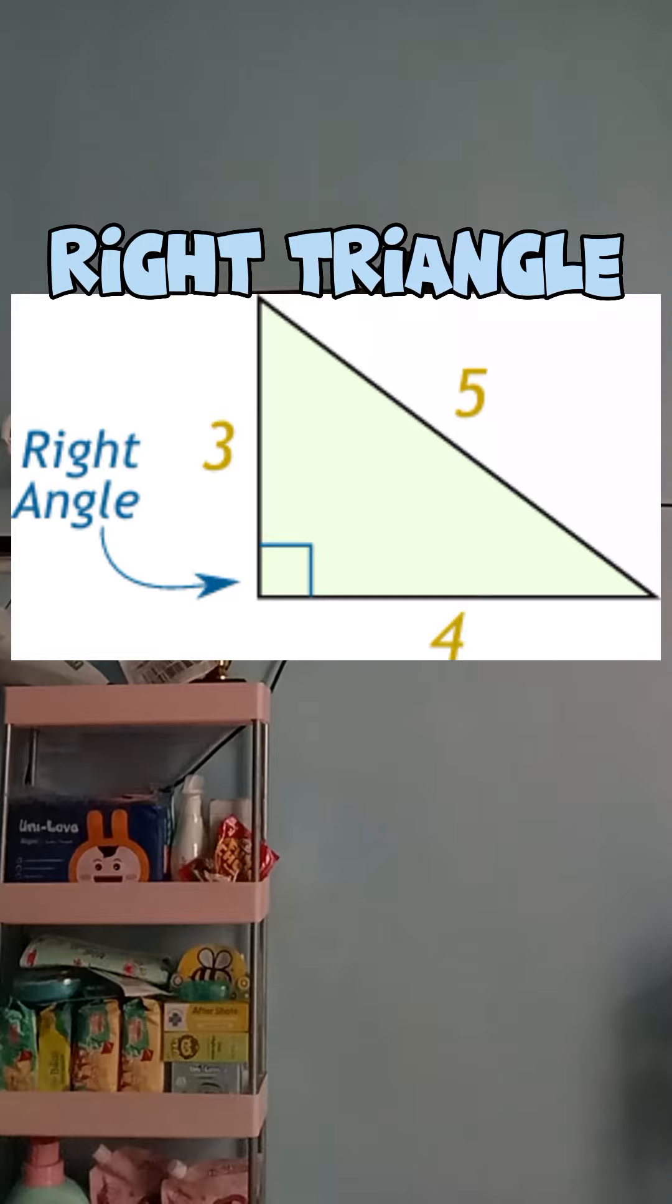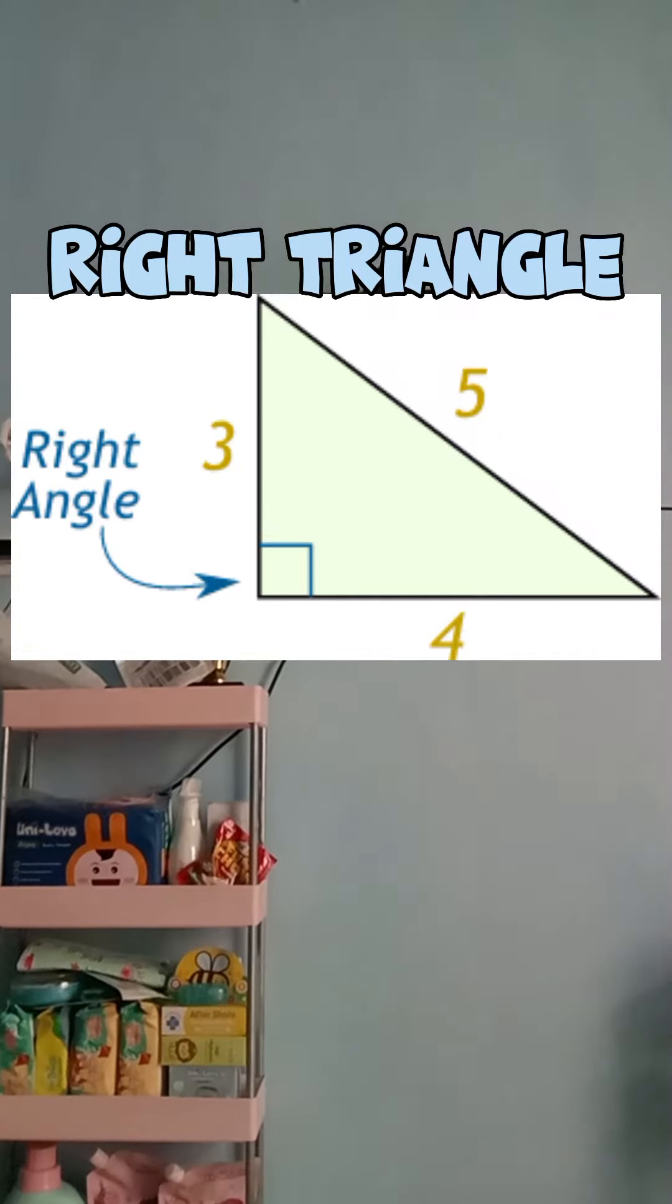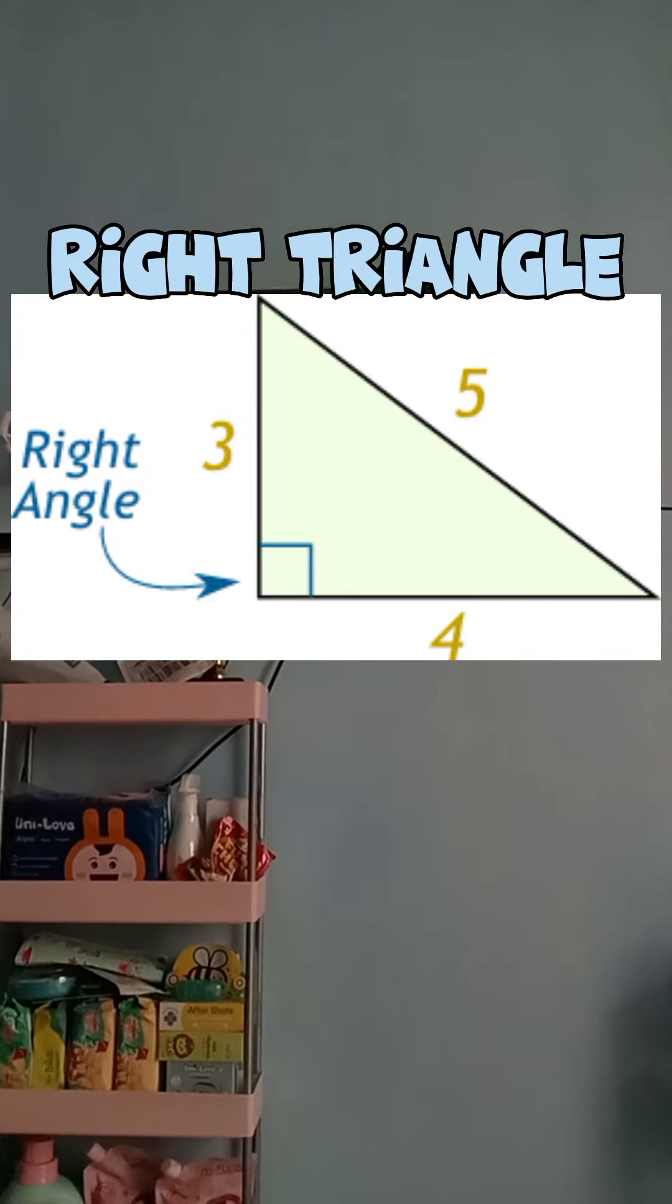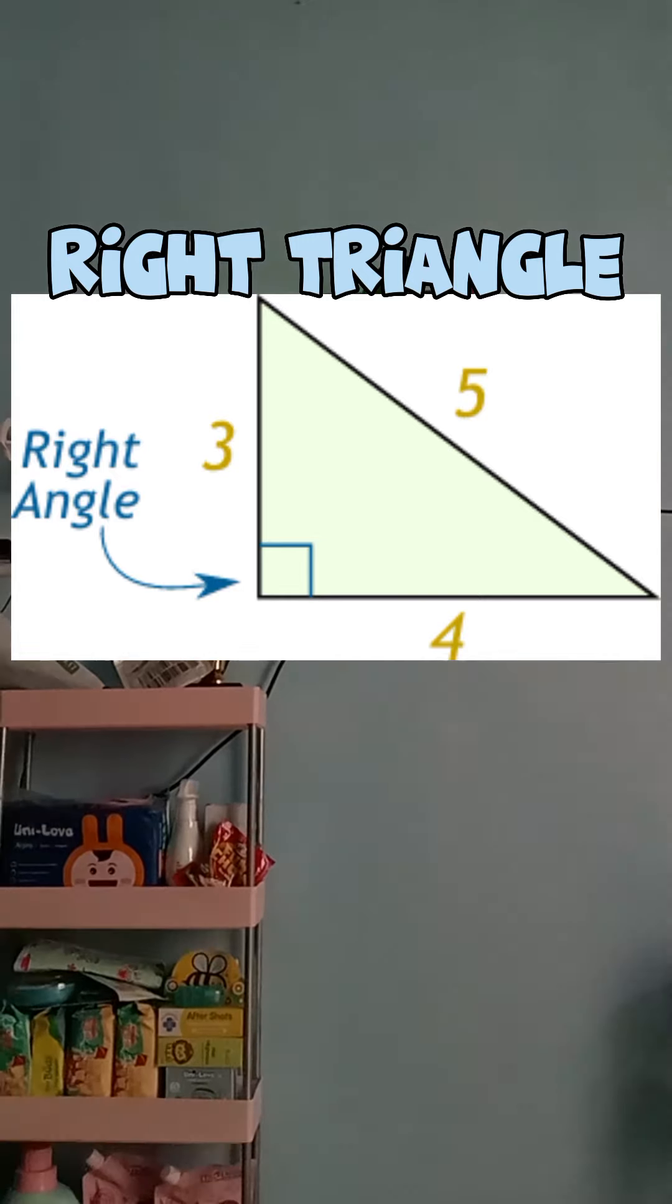A right triangle is a triangle in which one of the interior angles is 90 degrees. The longest side of the right triangle, which is also the side opposite the right angle, is the hypotenuse and the two arms of the right angle are the height and the base.